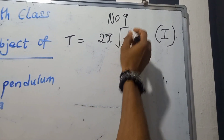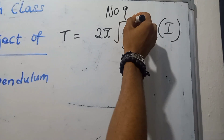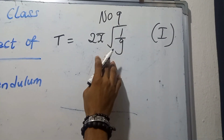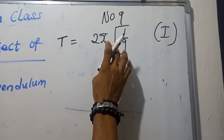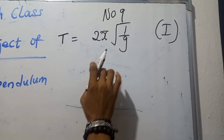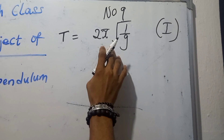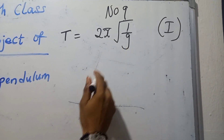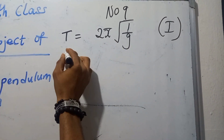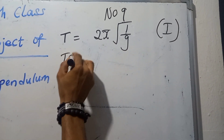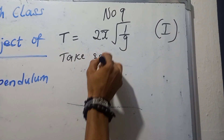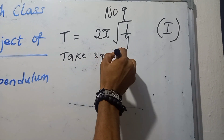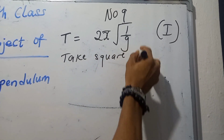Since here we have a square root, I'm going to use squaring to eliminate it so that it becomes one single fraction. To do that, you take the square on both sides.